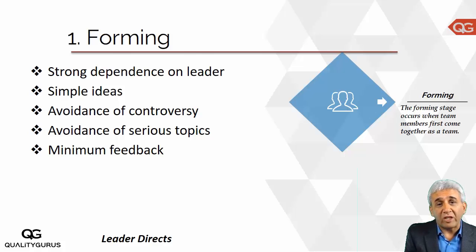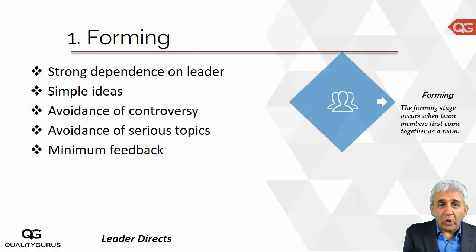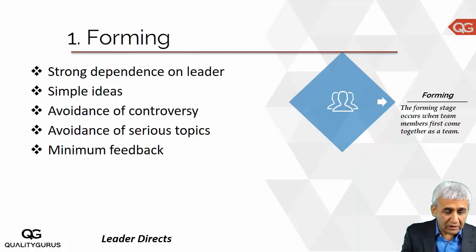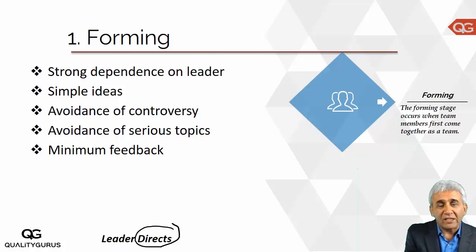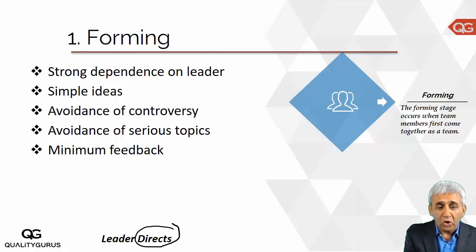There is a tendency to avoid controversy because everyone is a stranger, so there is no serious topic discussion and minimum feedback. What the leader needs to do at this time is direct — the leader directs in the forming stage. Someone has to firmly tell team members what to do because they are apprehensive of the situation. This is the time when the leader needs to take a strong position and direct the team towards the goal.